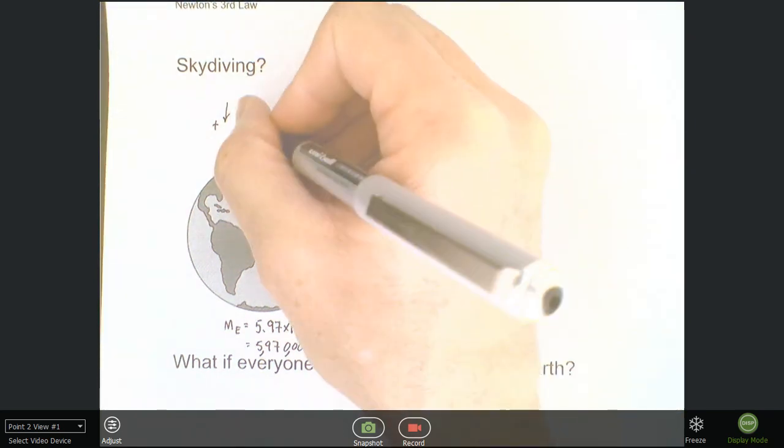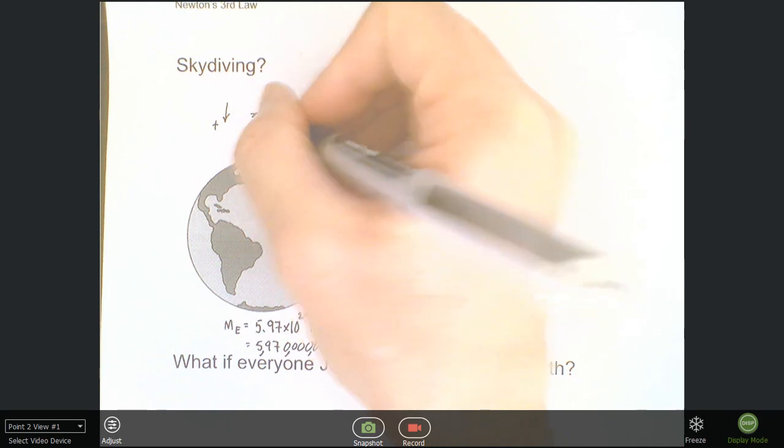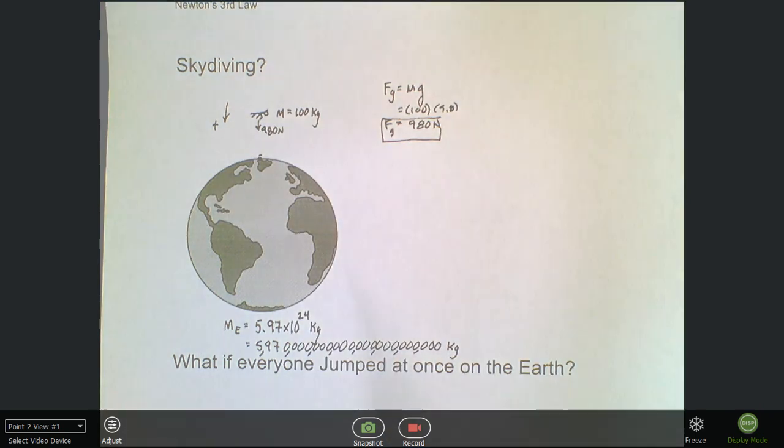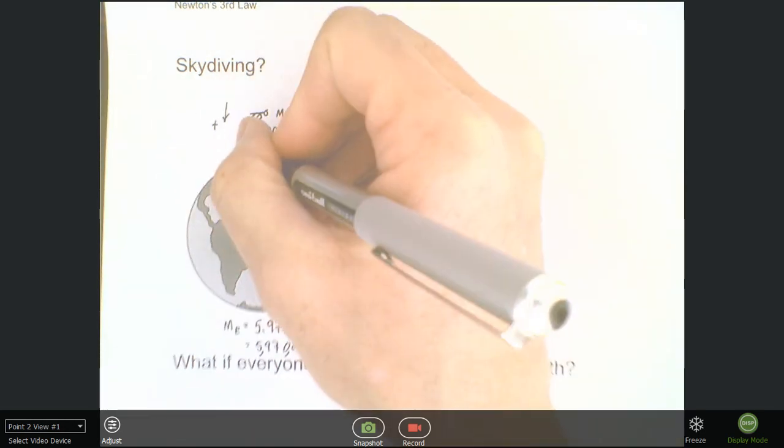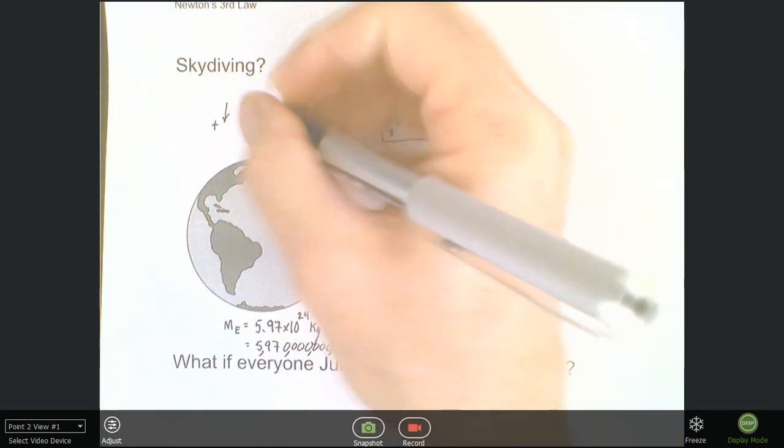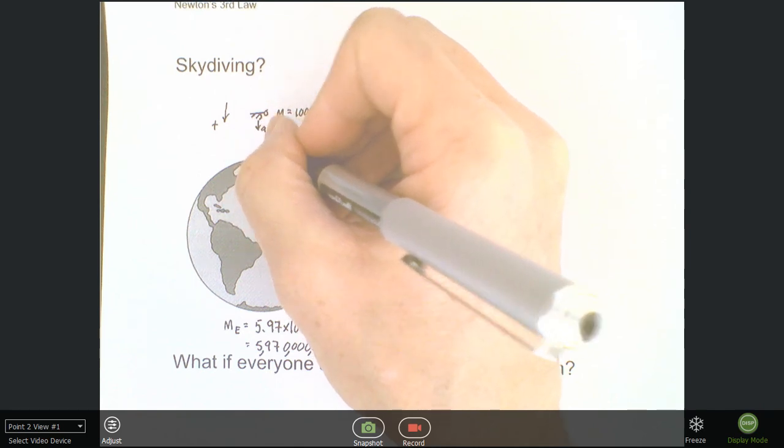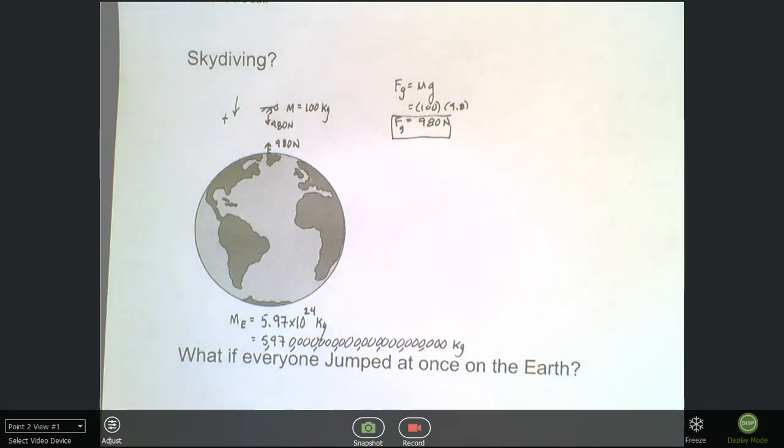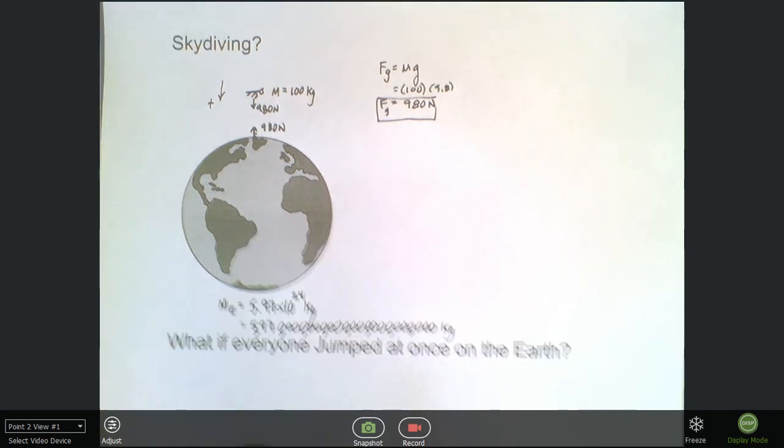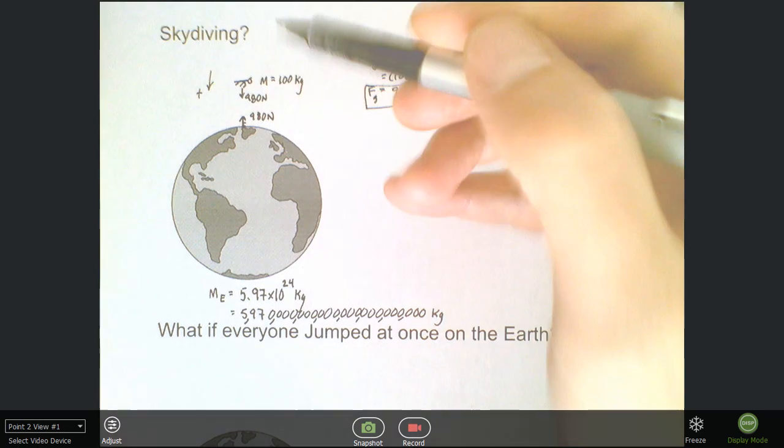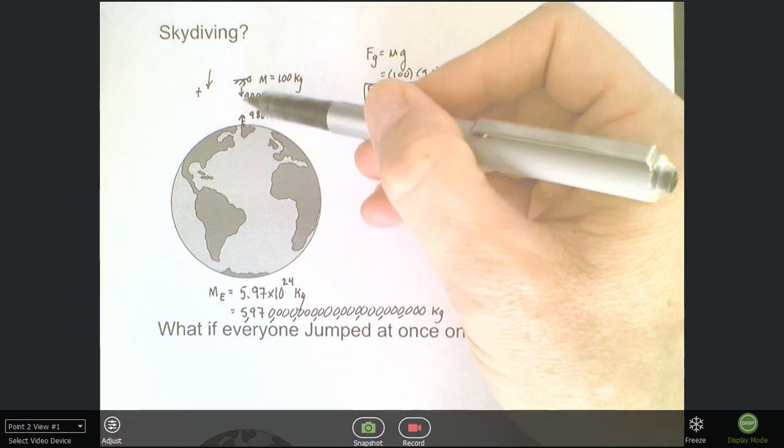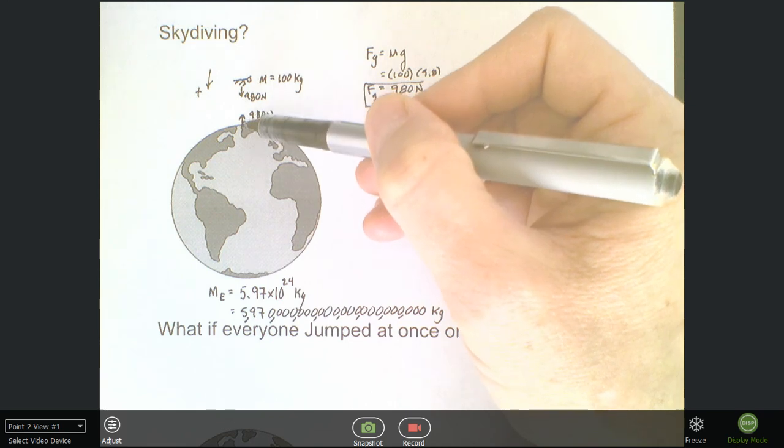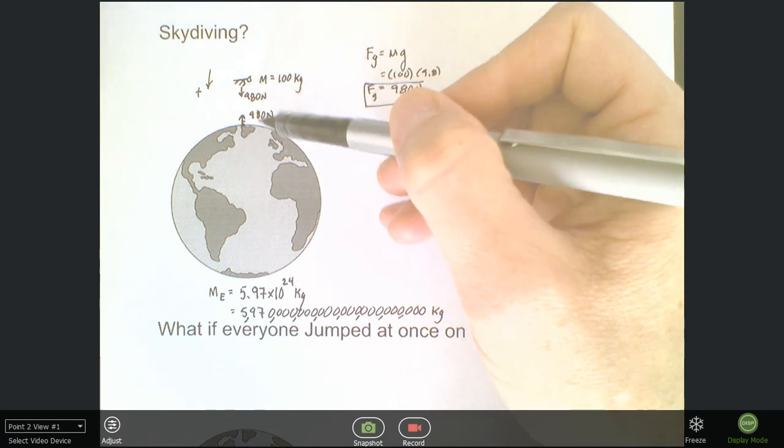It's 980 newtons. Well, Newton's third law says that if the person is attracted to the earth with 980 newtons, then the earth is also attracted to that person with 980 newtons of force. And Newton's third law is correct, it works, it's a universal fact. So that means that this object here is moving downward and accelerating towards the earth, and the earth is feeling an upward pull from that person of 980 newtons.